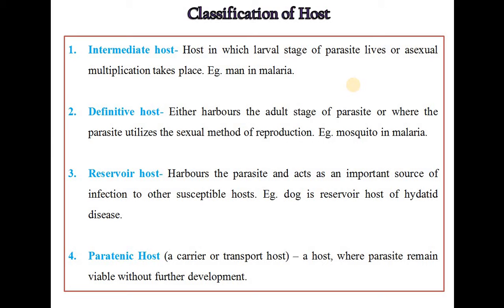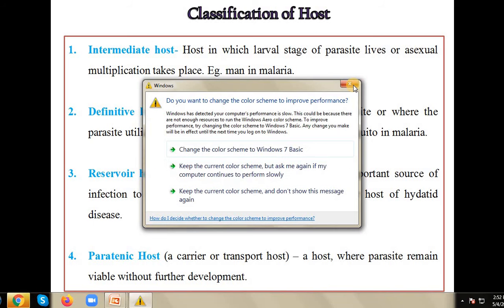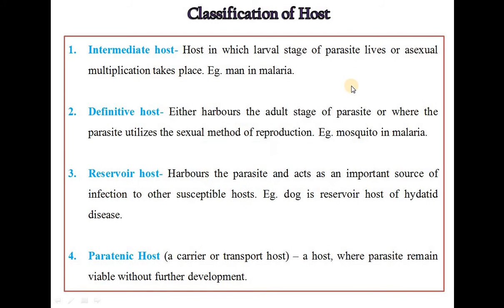The second category is the definitive host. In the definitive host, it either harbors the adult stage of the parasite or the parasite utilizes the sexual method of reproduction. For example, the mosquito is the definitive host in the case of malaria. The third category is the reservoir host, which harbors the parasite and acts as an important source of infection to other susceptible hosts. For example, the dog is the reservoir host of hydatid disease.